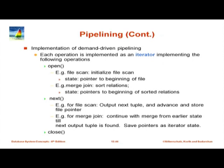To implement demand-driven pipelining, there are three methods using an iterator interface. You call open on a node to initialize it — for example, merge join might sort its relations. When you call next, the operation returns the next tuple and advances its state. A file scan just outputs the next tuple and advances the file pointer. For merge join, it continues the merge and returns the next matching tuple. Close shuts down the pipeline. That was a quick overview of how an entire expression is evaluated.